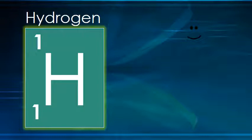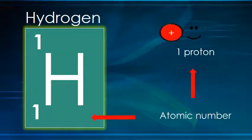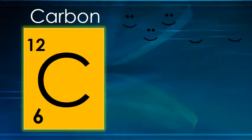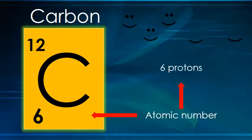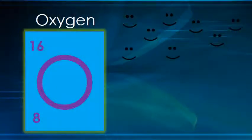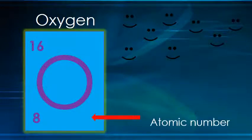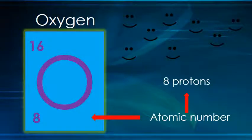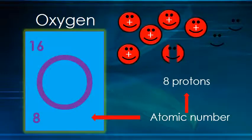For example, an atom of hydrogen has atomic number 1 because it has one proton and one electron, but it does not have any neutron. Similarly, a carbon atom has atomic number 6, which means it has 6 protons. In an oxygen atom, the atomic number is 8, which means there are 8 protons present.